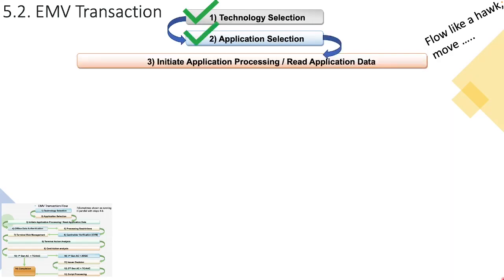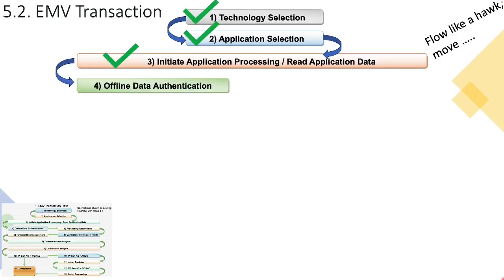Now that we've established which virtual card will be used for the transaction, the virtual card and the terminal have a conversation — an exchange of information. We then go into a phase called Card Authentication Methodology (CAM), or Offline Data Authentication (ODA), which takes the form of SDA, DDA, or CDA. In this phase, processing is undertaken to verify that the card being used is a genuine, authentic card and not an attempt to counterfeit.